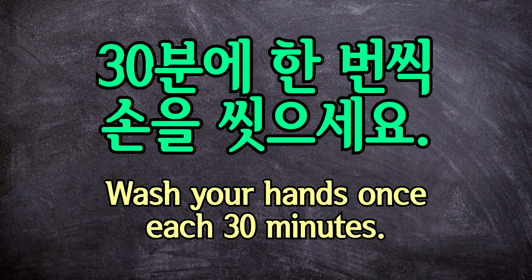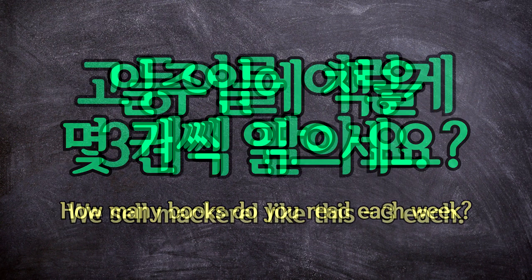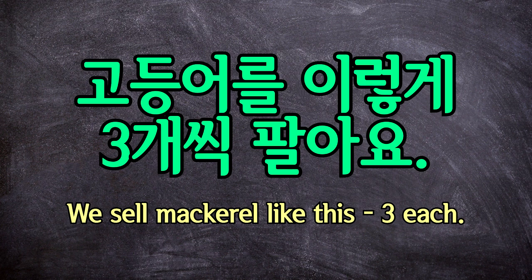Here are a few more examples. 삼십 분에 한 번씩 손을 씻으세요. Wash your hands once each 30 minutes. While this sentence would also work without 씩, adding it makes it clear that you mean every 30 minutes. 일주일에 책을 몇 권씩 읽으세요? How many books do you read each week? 고등어를 이렇게 세 개씩 팔아요. We sell mackerel like this, three each.